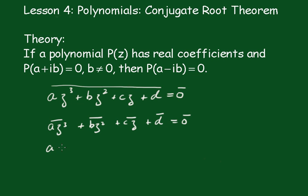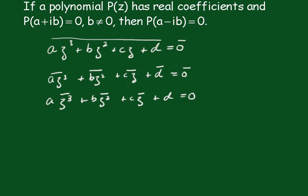So we can write this as a(z³)* + b(z²)* + c(z)* + d = 0. And that means a(z*)³ + b(z*)² + c(z*) + d = 0.